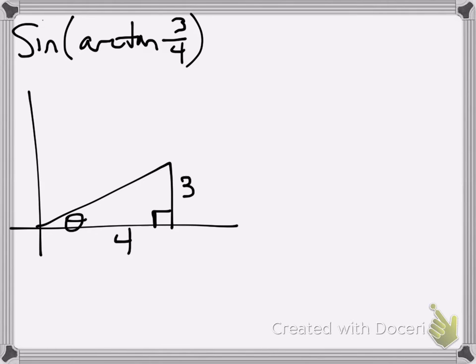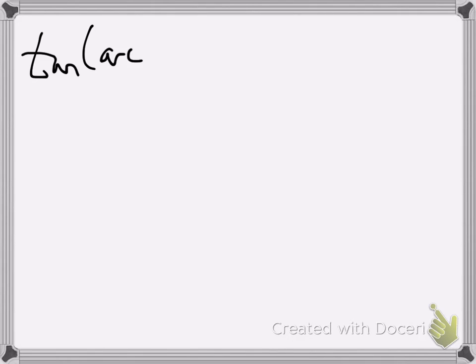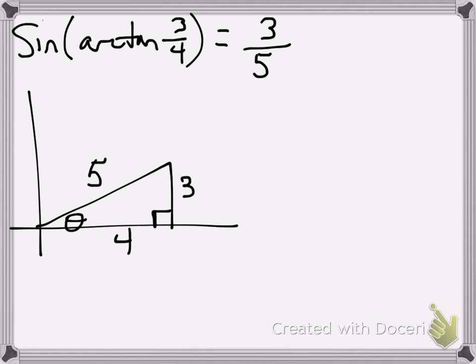We'll draw our right triangle. Since we're going backwards from tangent, I know that for this angle theta, opposite side has to be 3, and adjacent has to be 4. Well, by looking at the figure, it's very easy to tell, this is a 3, 4, 5 right triangle. So the sine has to be 3 fifths, opposite over hypotenuse.